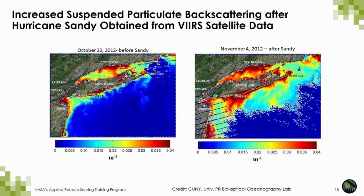Hurricane Sandy, also unofficially referred to as Superstorm Sandy, was the deadliest and most destructive hurricane of the 2012 Atlantic hurricane season. It caused more than 70 billion dollars in damages and killed about 230 people in eight countries. Here you can see two VIIRS images — from one week before Sandy and a couple of days after — along the Northeast coast of the U.S. They show the extent of the reduction in light intensity as measured by Kd. Even about one month after the hurricane, there was still a pretty big attenuation in the water column caused by the amount of sediments drawn into coastal waters as a result of Sandy.